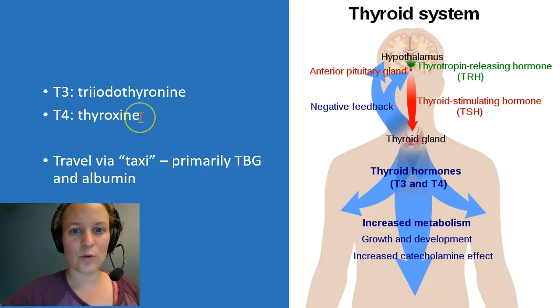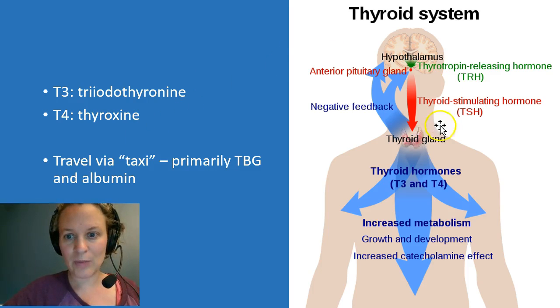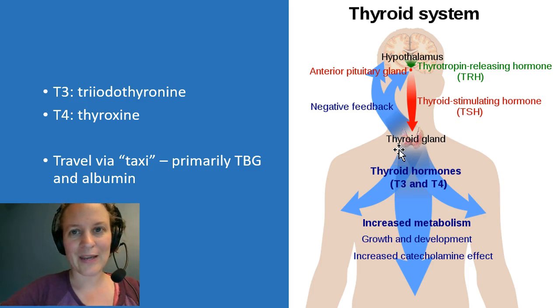So T3 is triiodothyronine and T4 is thyroxine. They're both produced by the thyroid gland in the neck and they have similar actions, but they're not quite the same. We'll talk about that in a minute.